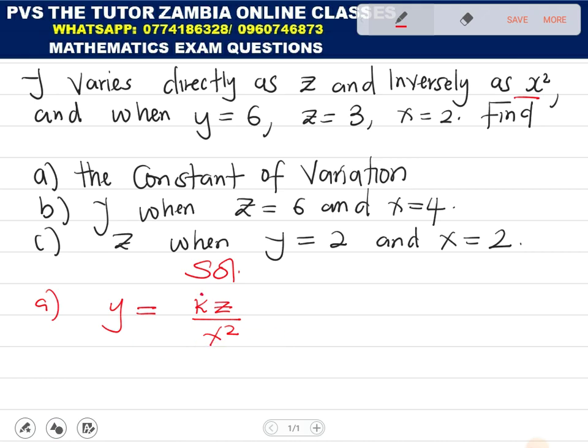What we are looking for is this k, the coefficient of variation. How do we make k the subject? I've already made it a subject of the formula. K is just equal to y x squared over z. So this would be 6 times 2 squared over 3. I'm getting these values that are here and plugging them there. So I'm getting k, the constant of variation, as 8.